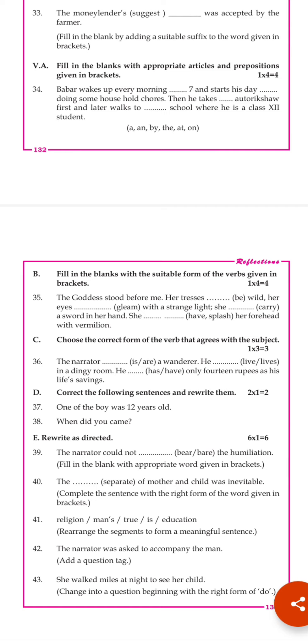The passage reads: 'Barber wakes up every morning at 7.' The preposition required is 'at.' 'And starts his day by doing some household chores.' 'By' is the preposition. So we've used two prepositions. Since it's 50% articles and 50% prepositions, two articles are still needed. The next two blanks require articles — either 'a,' 'an,' or 'the.'